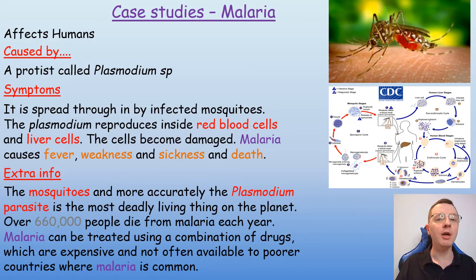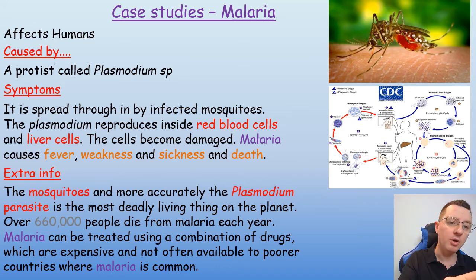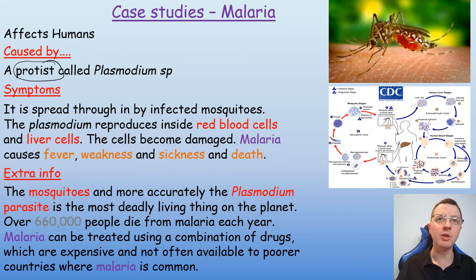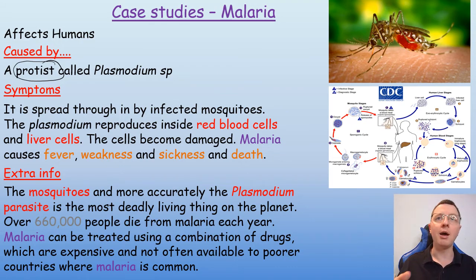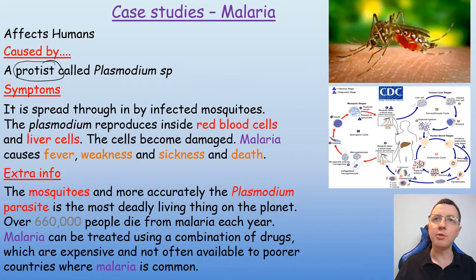Malaria is a disease that affects humans and it's caused by the protist plasmodium species. Protist is a shortening of the word protozoa, which is one of the five main kingdoms of life: animals, fungi, plants, bacteria and protozoa. Sometimes it's also referred to as protoctists.